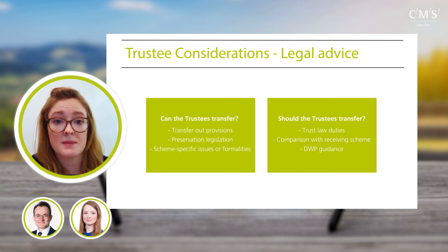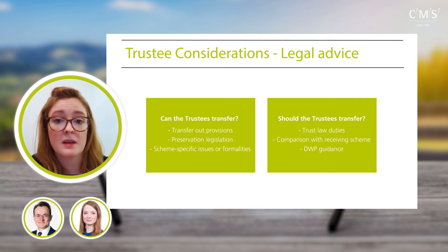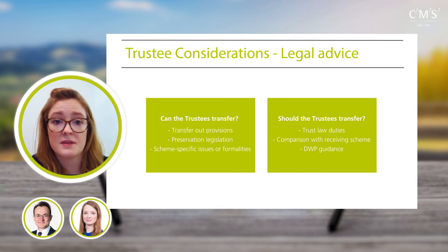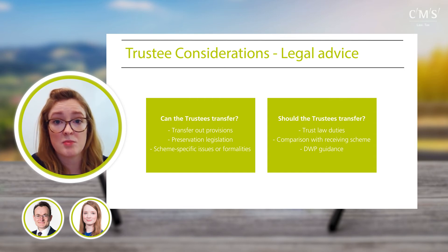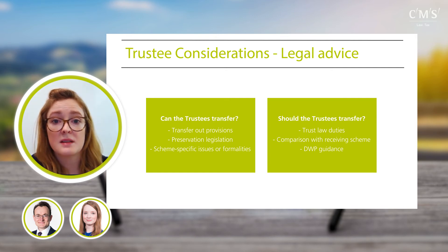Trustees should consider any material differences in benefits or how members can access benefits, the master trust's investment arrangements into which members' funds will be transferred, the charges members will pay, and the security of members' rights under the master trust. The structure of a master trust means there will be trustee oversight, and it has gone through a comprehensive authorisation process with the Pensions Regulator and remains supervised — usually providing comfort that members' benefits will be properly looked after. The DWP published guidance at end of 2018 specifically aimed at the DC-to-DC transfer process, which any trustee board would wish to consider and, as far as possible, comply with as best practice.